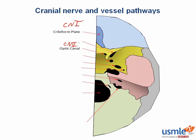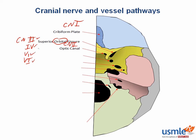Lateral to that we have the superior orbital fissure, where cranial nerves 3, 4, V1, and 6 pass through. In addition to these nerves, through the superior orbital fissure you also get the ophthalmic vein as well as sympathetic fibers. It makes sense that this is the orbital fissure — orbital meaning the orbit, or where the eye is. Cranial nerves 3, 4, 6, and the first division of the trigeminal nerve are all important for different functions of the eye, mostly motor movement, so it makes sense they all travel together through this foramen.